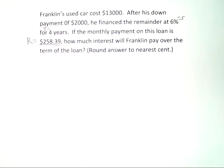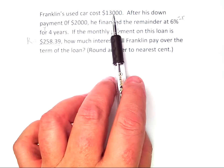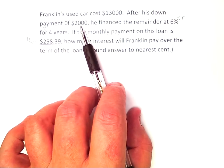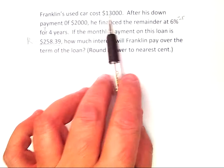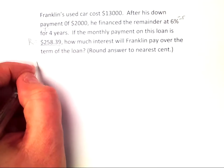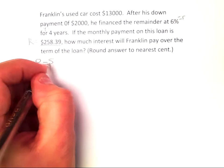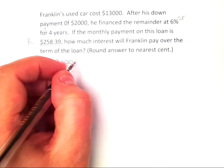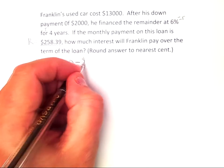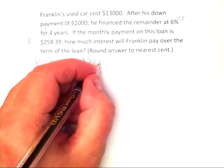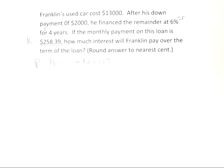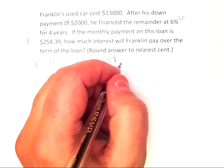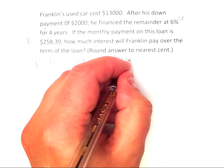Now, what is the present value? Well, Franklin bought a $13,000 car, but he paid $2,000 of it already. So the present value is the amount the car cost minus however much down payment was provided. The present value is actually only $11,000. So be careful about that.